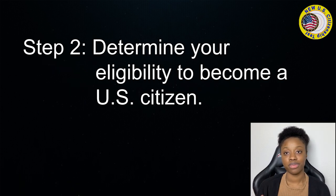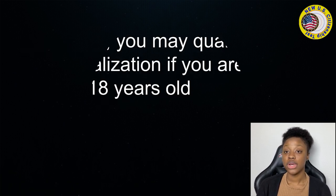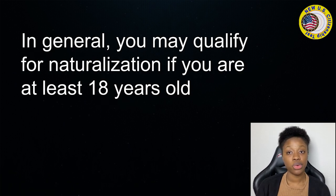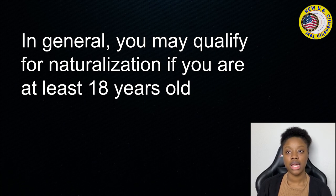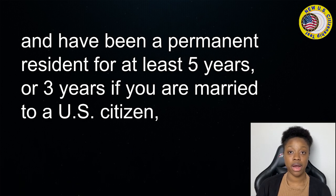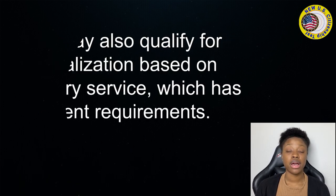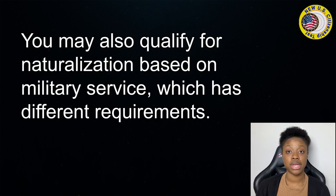Step 2: Determine your eligibility to become a U.S. citizen. In general, you may qualify for naturalization if you are at least 18 years old and have been a permanent resident for at least 5 years, or 3 years if you are married to a U.S. citizen, and meet all other eligibility requirements. You may also qualify for naturalization based on military service, which has different requirements.